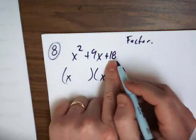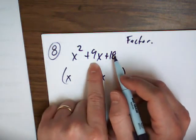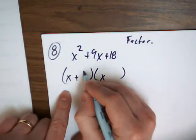What would you multiply 18 by to get 9? Plus 6 and plus 3.